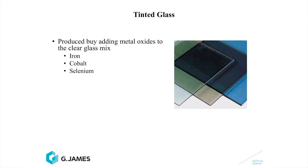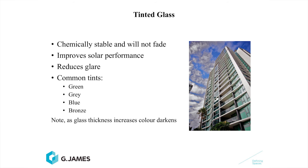Tinted glass is produced by adding metal oxides to the mix. These can be iron, cobalt, and selenium. This product is very chemically stable — it will not fade or change at all. Tinting improves the solar performance of glass and reduces glare.